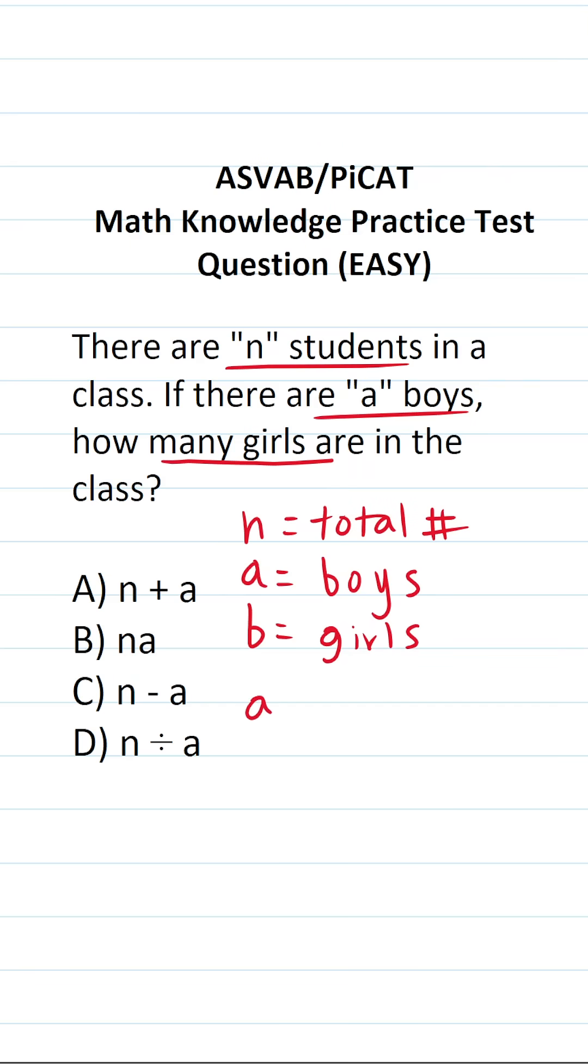The total number of boys in the class, a, plus b, the total number of girls in the class, will equal n, the total number of students in the class.